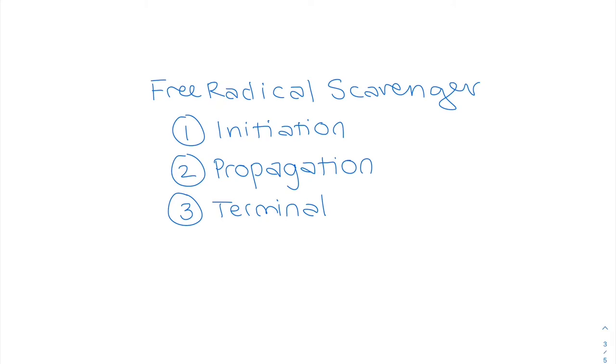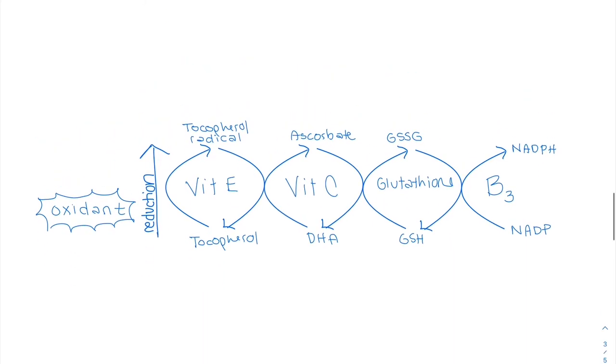And also tocopherol radicals, that radical is relatively non-reactive and can be reduced by ascorbic acid. So vitamin E when it's oxidized when it protects against damaging free radicals. And then vitamin C hands off that electron. What does that look like?